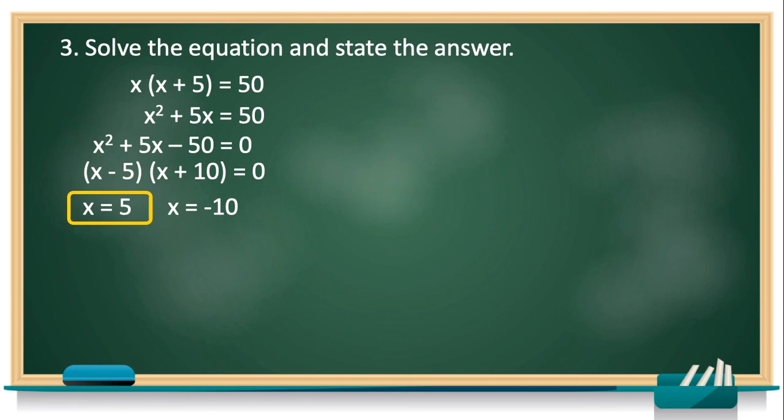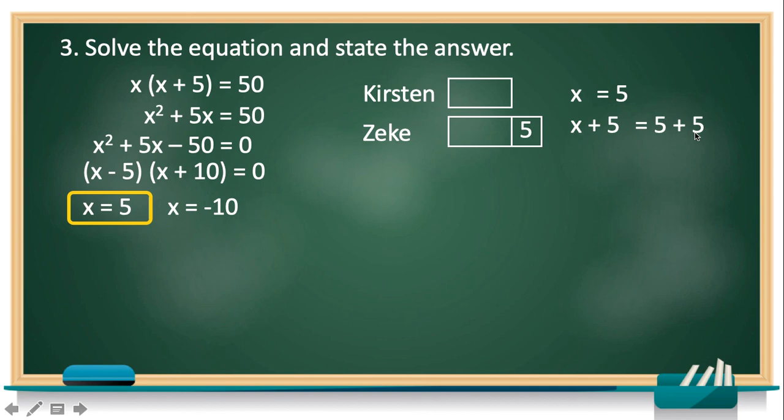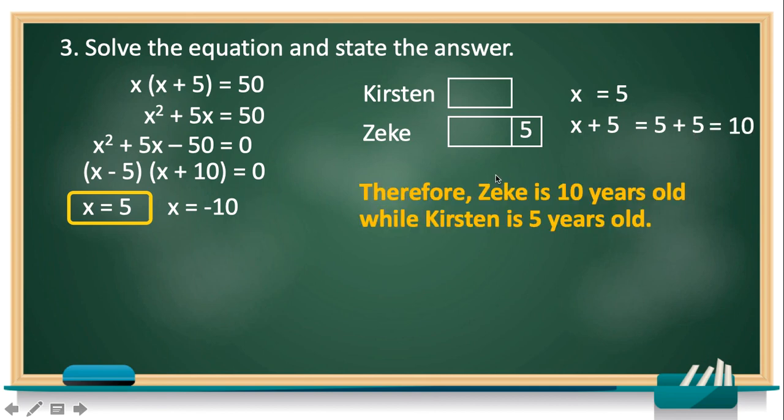Then let's go back to our diagram. Since Kirsten has the variable X, so he is 5 years old. Then let's solve Zicky's age. Let's substitute X plus 5 to 5 plus 5, which is equal to 10. So therefore, Zicky is 10 years old, while Kirsten is 5 years old.